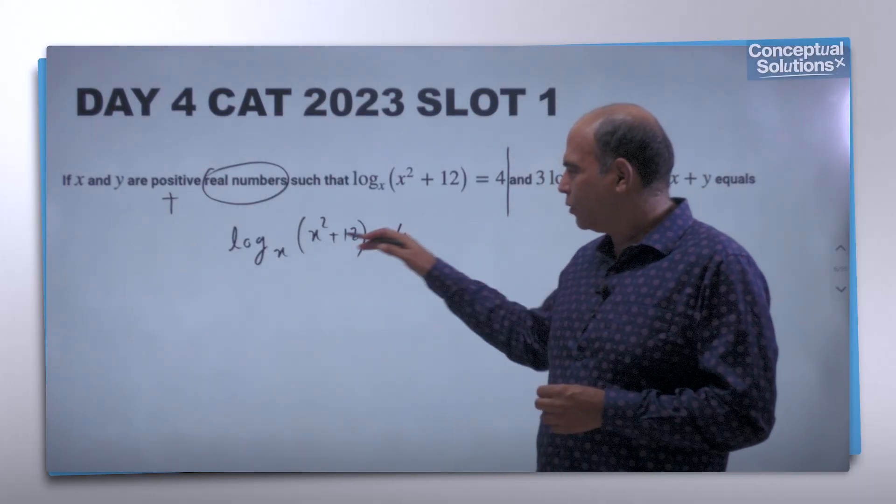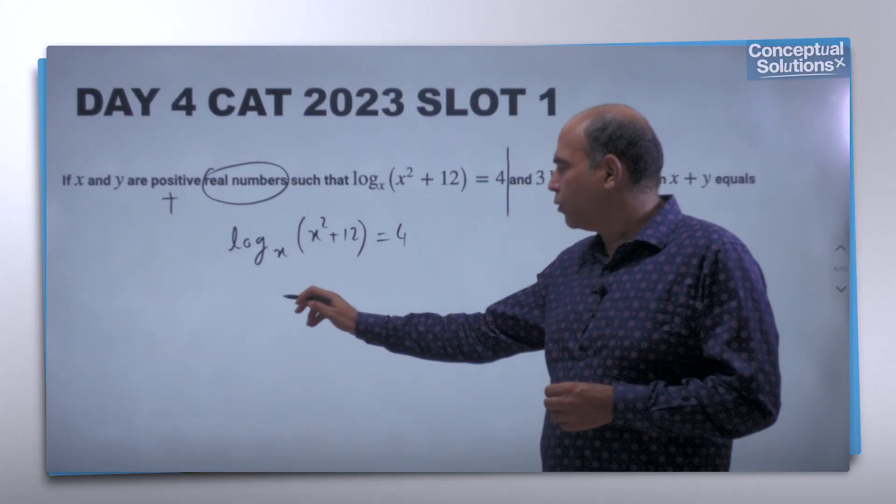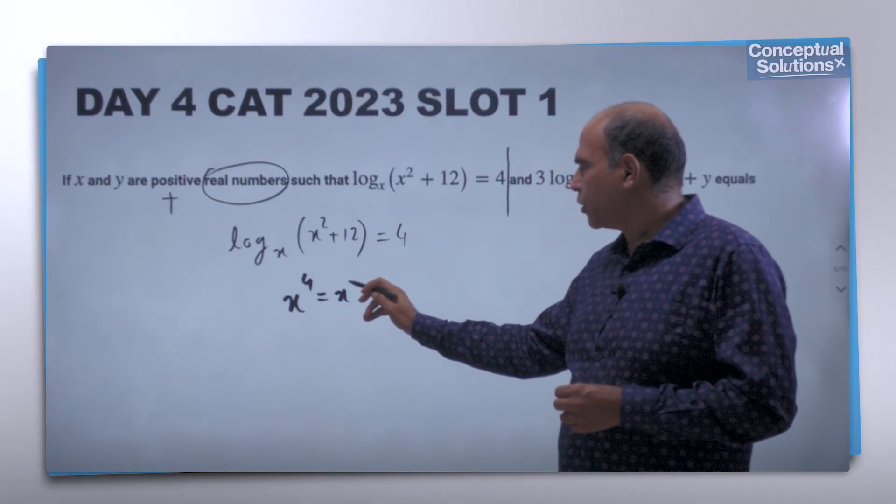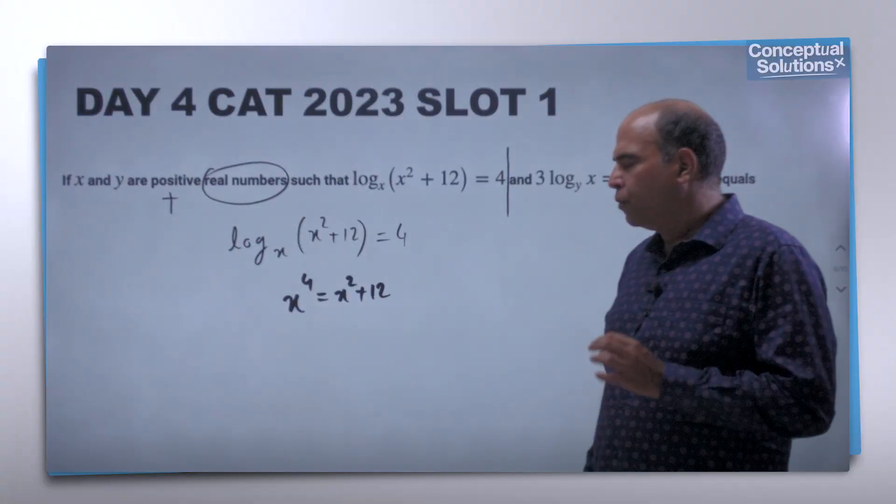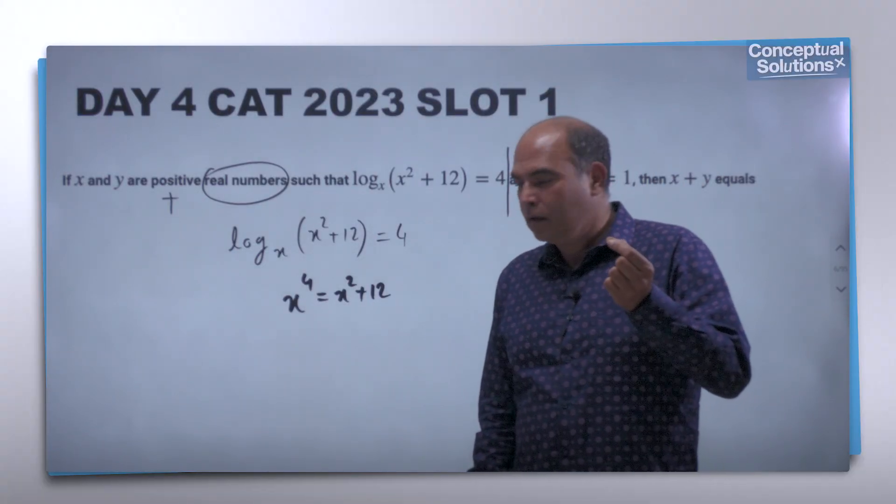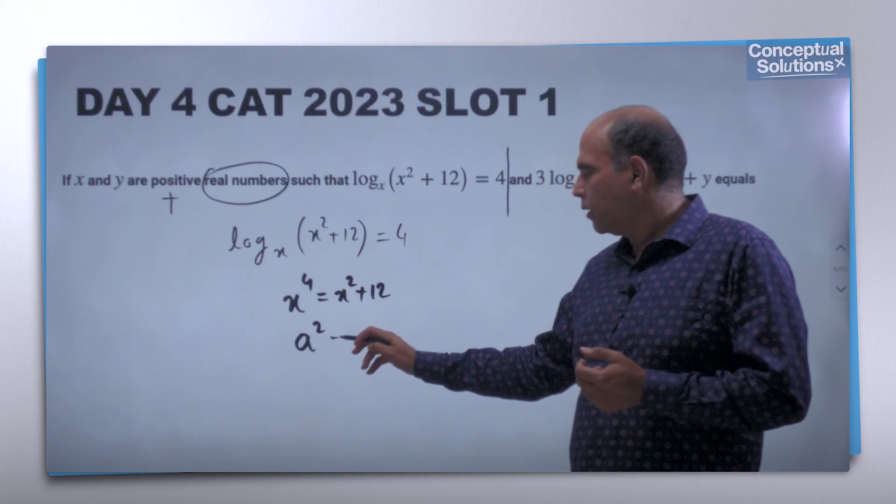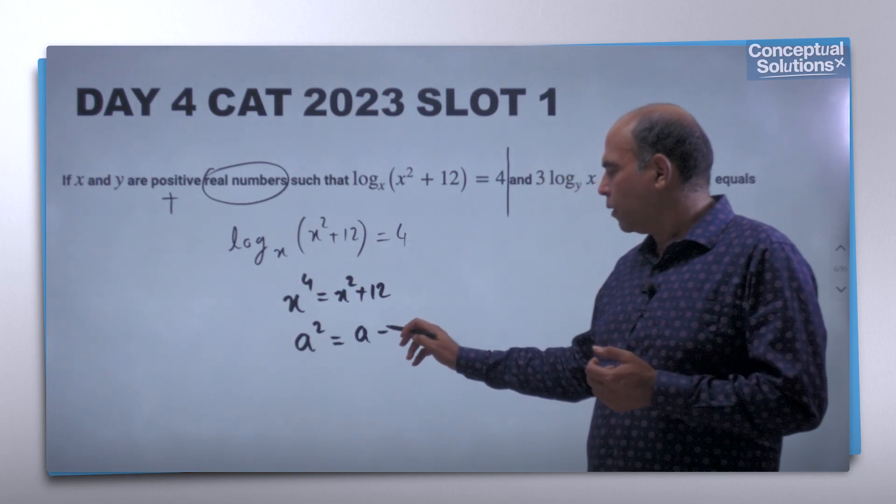If you use x² as a, then what will happen is that this will become a² = a + 12, which is a quadratic equation that works out to a² - a - 12 = 0.